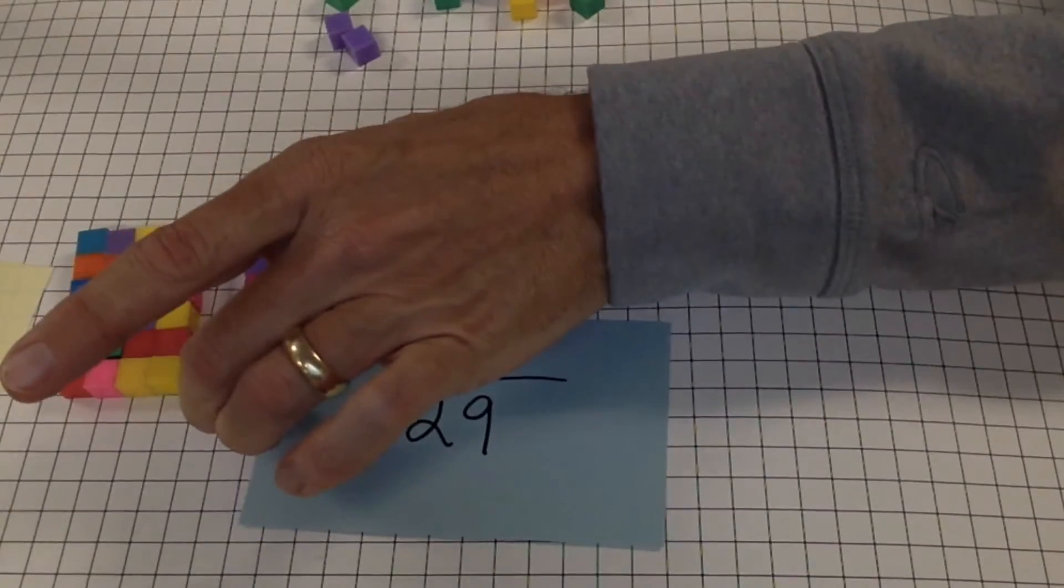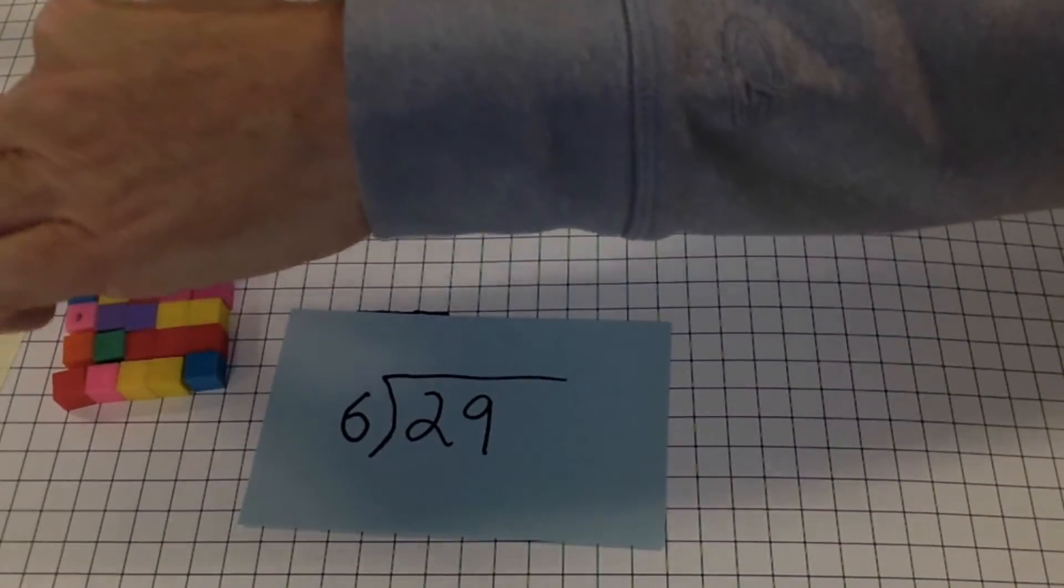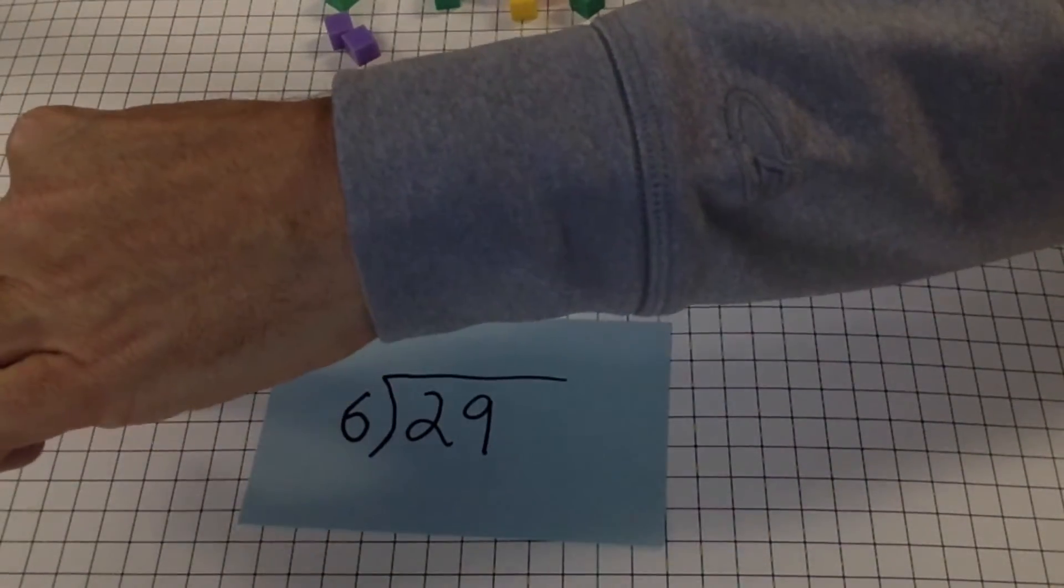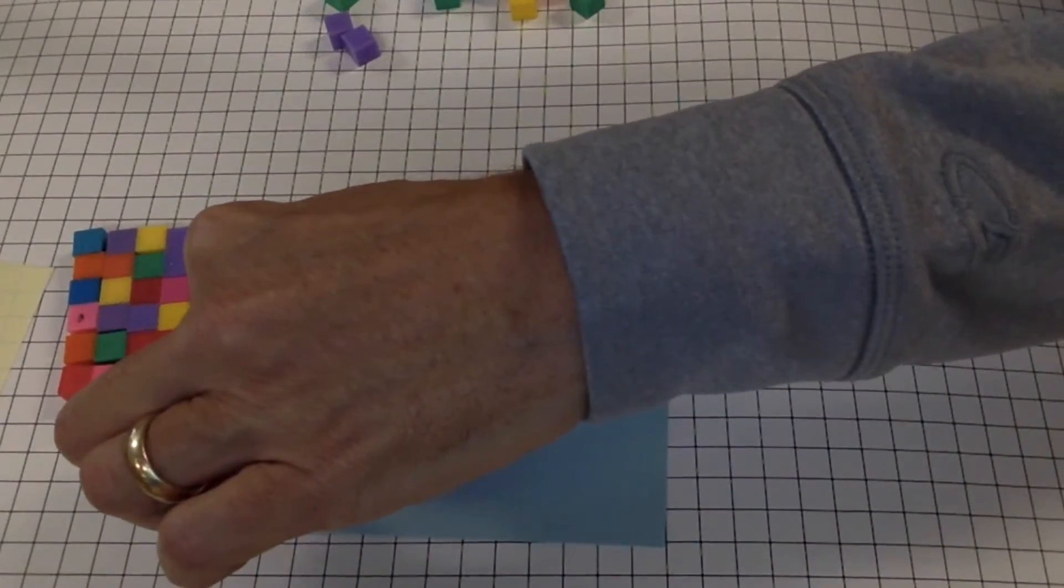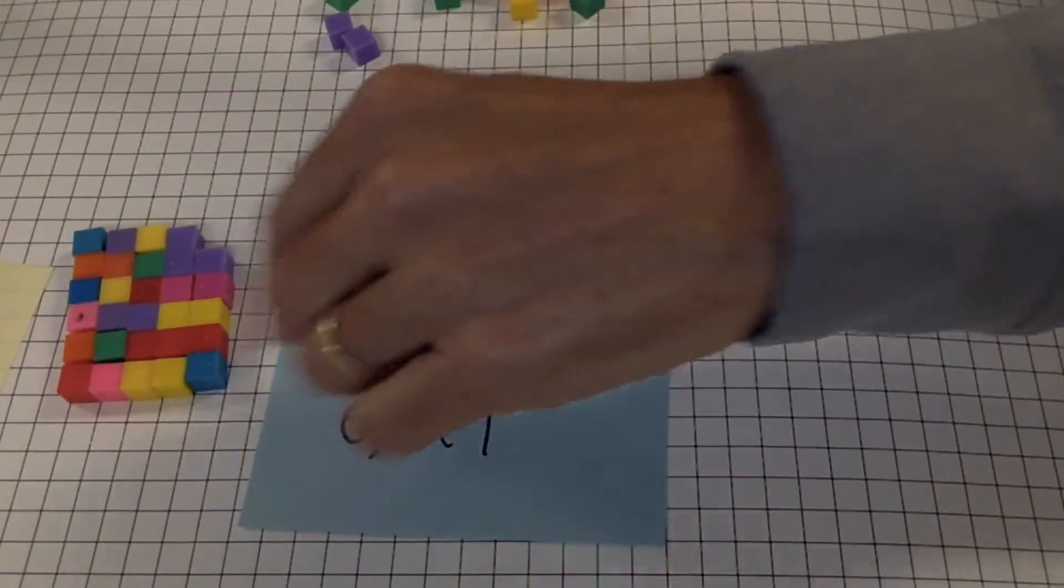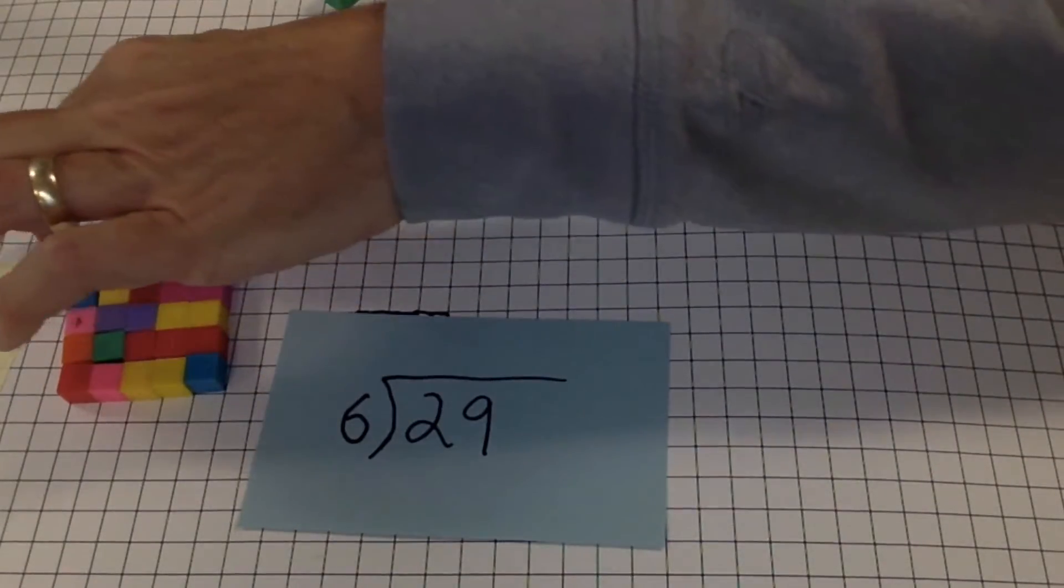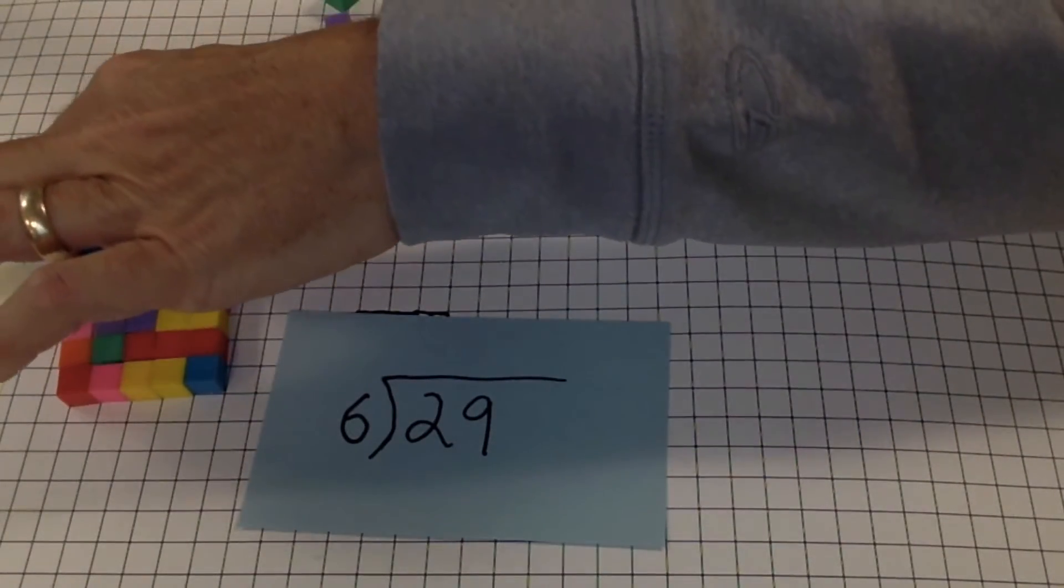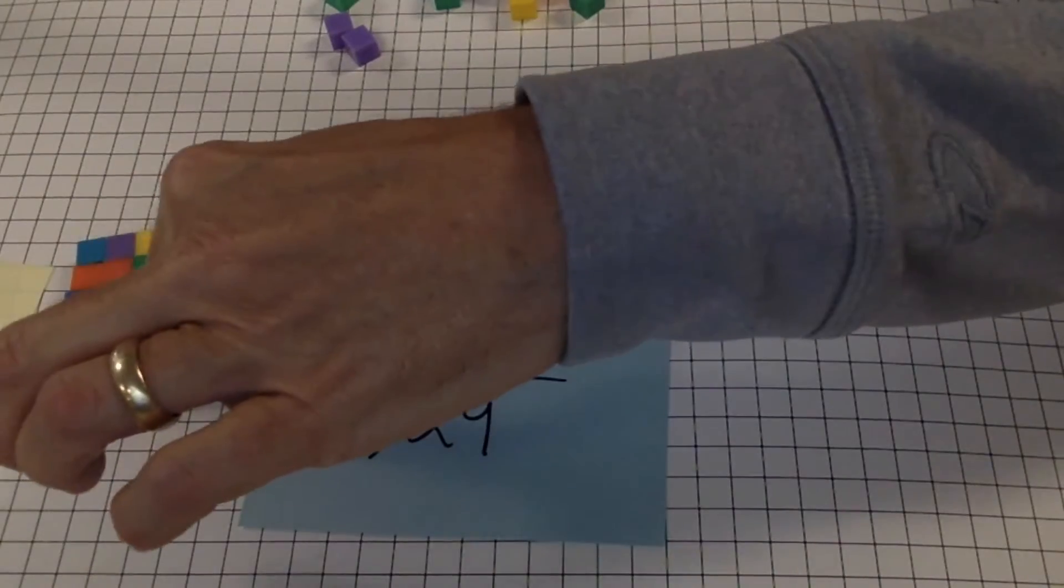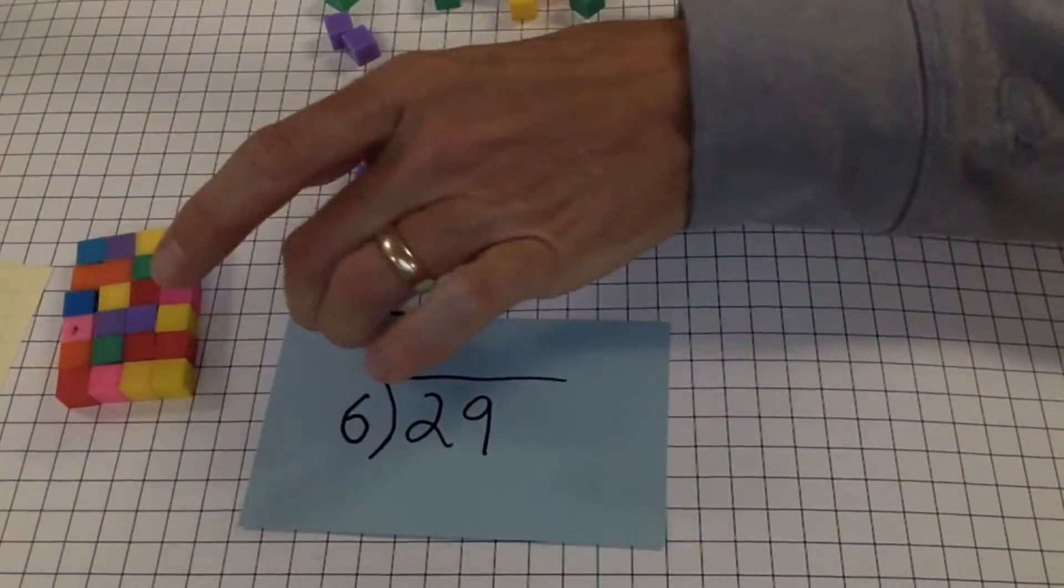So this is going to be the remainder. It's important that you count the number of rows that you put them in, not how many columns you made. Because otherwise, I might think it's 1, 2, 3, 4, 5 with this being left over. It's not the case. It's 4 with this being left over.